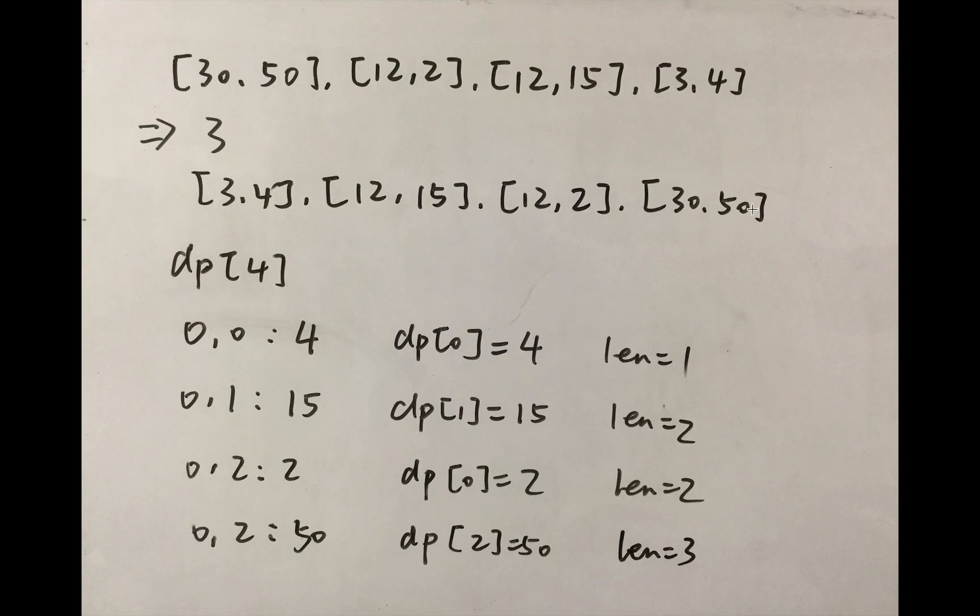And then we need to find the 50. And the 50 obviously needs to be inserted at the last. So DP[2] will equal 50. And the length should increment by 1. So in this case, it's 3. So we can Russian doll 3 at most.